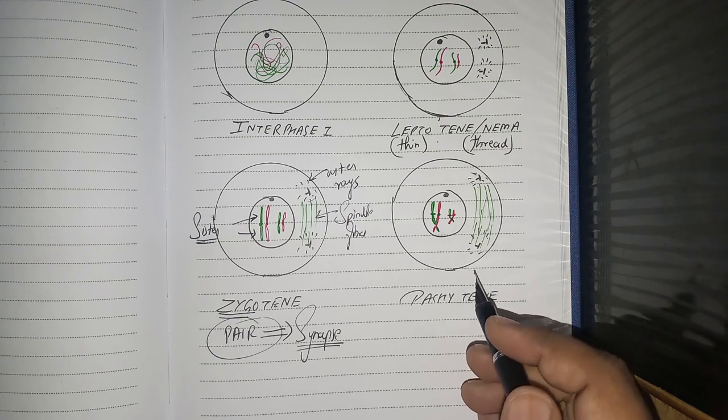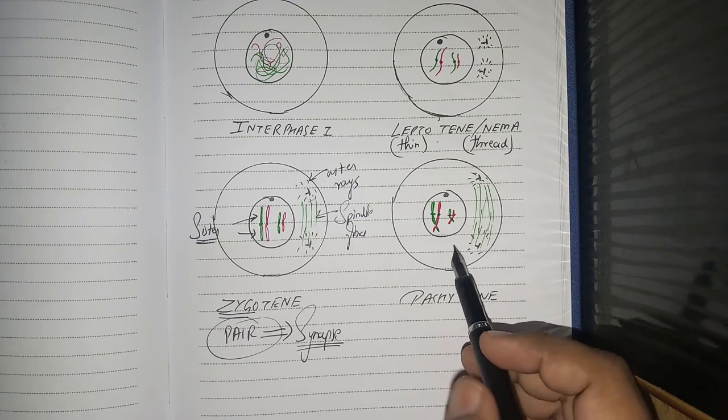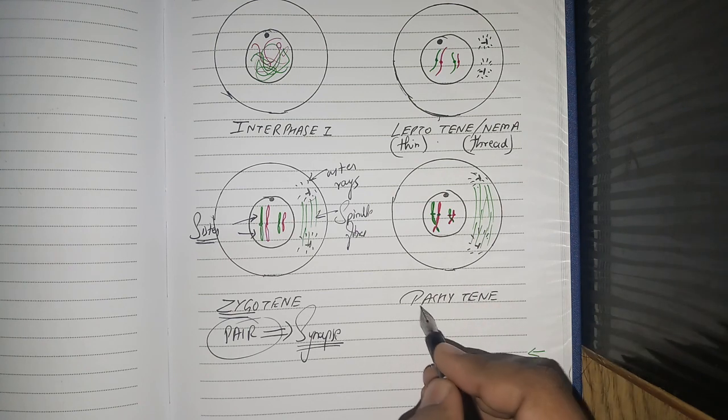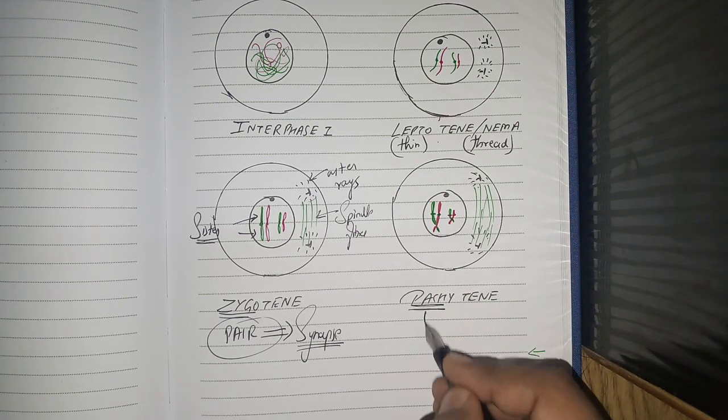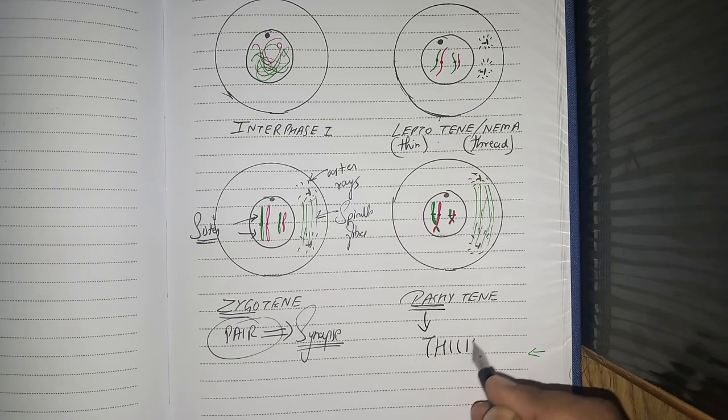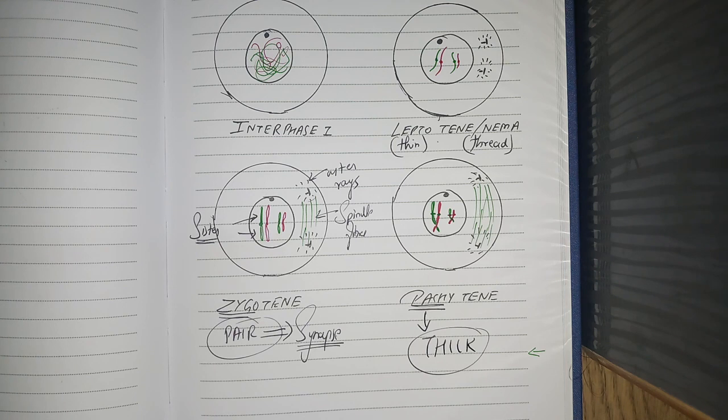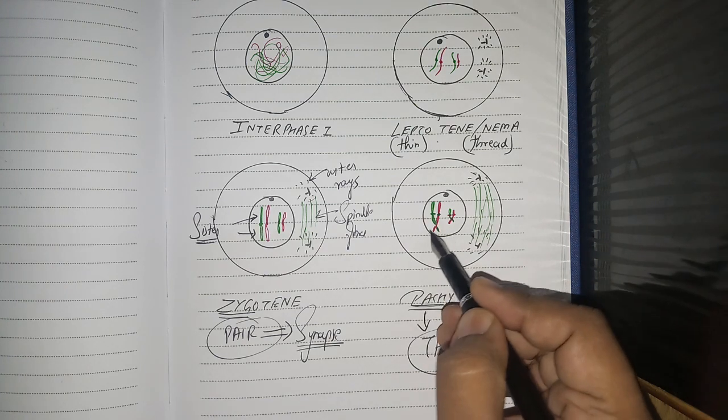Next stage is pachytene. Here the sister chromatids become visible, more visible. As pachy is thick, they become thick and visible. And there is something beautiful that happens here. It's crossover.